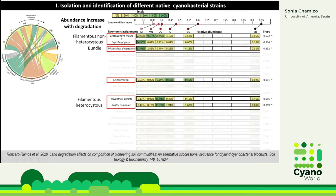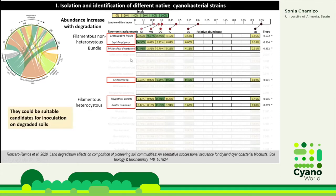There were previous works that identified Microcoleus as the pioneer cyanobacteria in the soil — the pioneer species colonizing the soil. But we found that there were other pioneer cyanobacteria that were even more abundant in degraded soils. We use this information because it may suggest that these species could be more suitable as candidates for inoculation and for restoration of degraded soils.